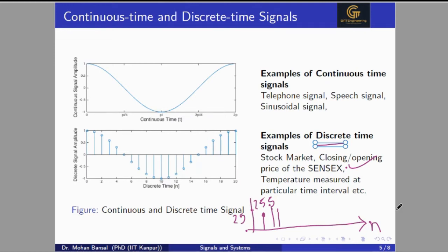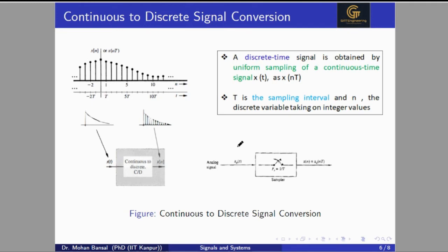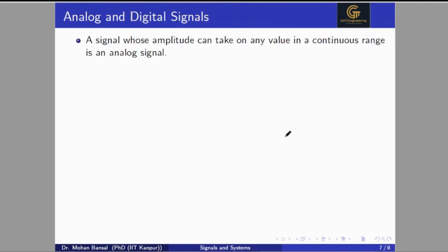Now, how do we get a discrete time signal from a continuous time signal? We use a sampler. A sampler is a technique to convert an analog or continuous time signal to a digital discrete time signal. The sampler works like a switch: when the switch closes we get the output, and when it is open we do not. Using this sampler on a continuous time input, we obtain an output sequence that is the discrete time sequence.